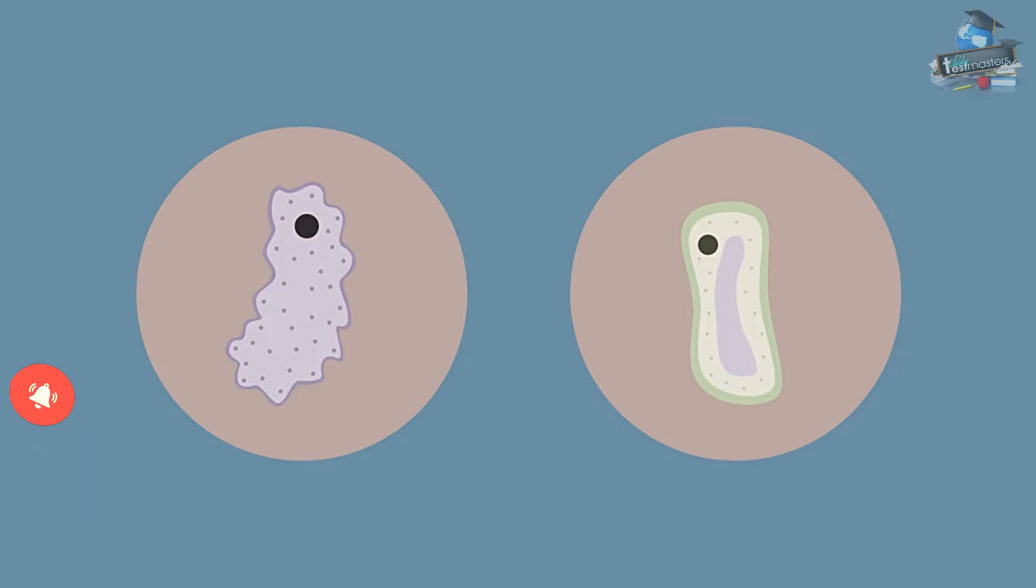And if osmosis causes lots of movement of water into the cell, plant cells swell and become turgid. They have a strong cell wall which prevents them from bursting, whereas animal cells don't have a cell wall and so they burst.